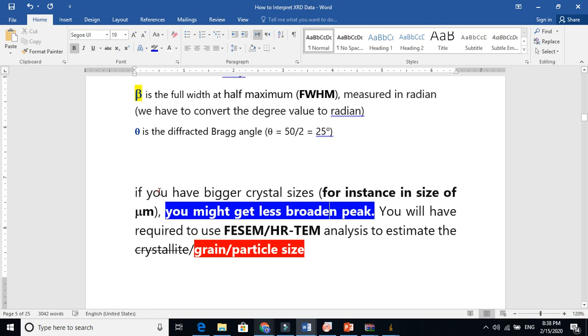If you have bigger crystal size, for instance in microns, you might get less broader peak. If we have bigger particles, big particles, you will have a sharp peak. This is how I explain, that if you decrease the size, you will get a broader peak. If you increase the size, you will get a sharper peak.